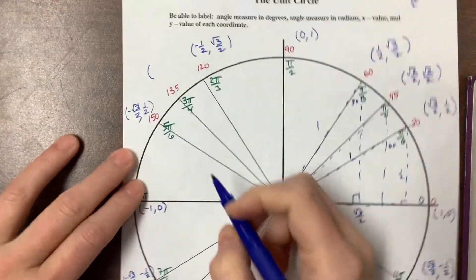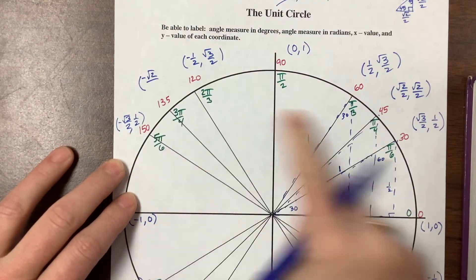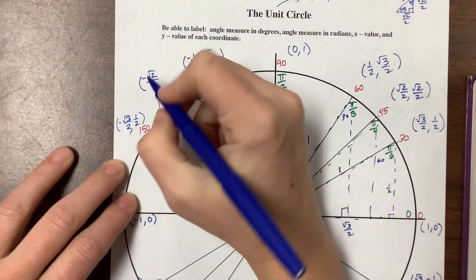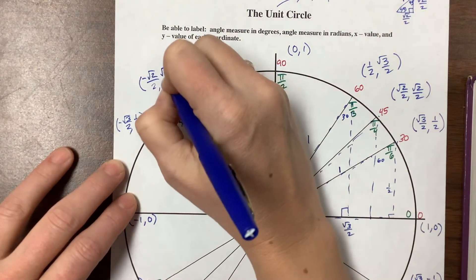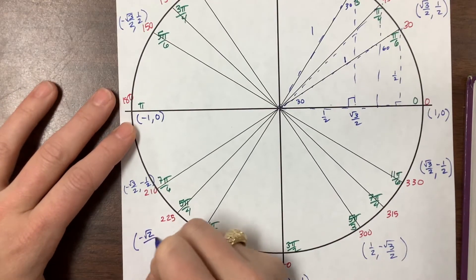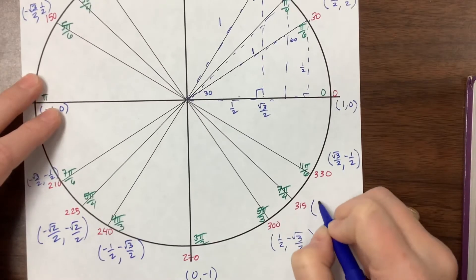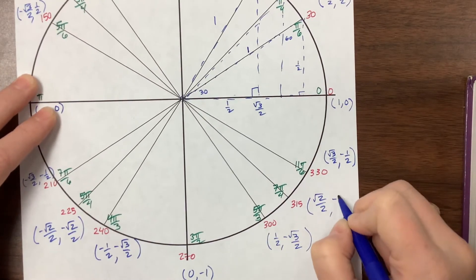Coming over here, 3π/4 has π/4 as its reference angle, so the x value is negative but the y value is positive. In quadrant 3 they're both negative. In quadrant 4 the x is positive but the y is negative.